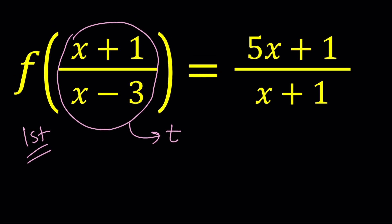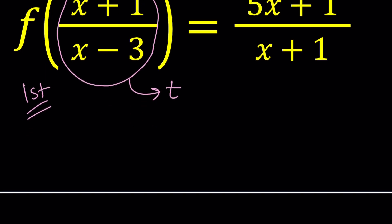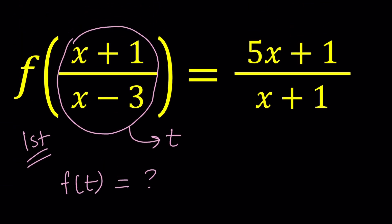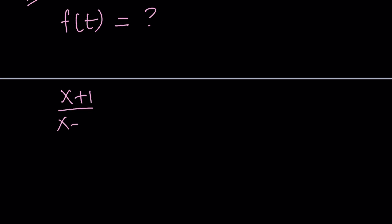So, by setting everything on the left-hand side equal to t, we're actually simplifying this expression. We're getting something like f of t. But, of course, on the right-hand side, you still have something in terms of x, which you need to turn into t. So, we do need a conversion, and for that, this is going to help us. So, I just set (x+1)/(x-3) equal to t.